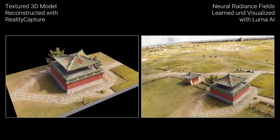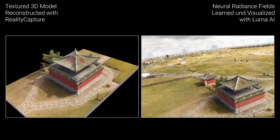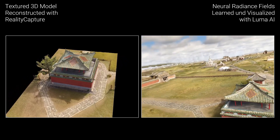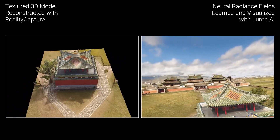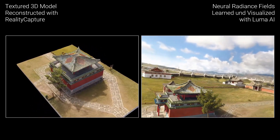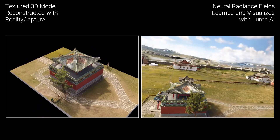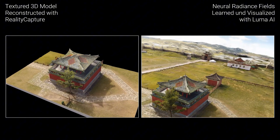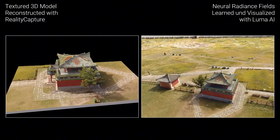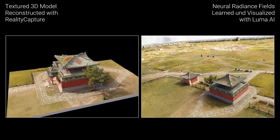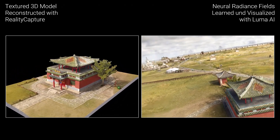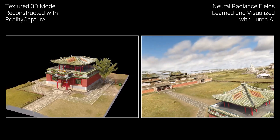Both results are to be evaluated very differently. On the left, we see the concrete measurable points and the result of the points identified in space. On the right, we see an interpolation of the photos from different angles. This also gives us the context of the actual 3D points, which can certainly provide great added value when interpreting the data. It remains to be seen whether this visualization technique will establish itself in 3D documentation.